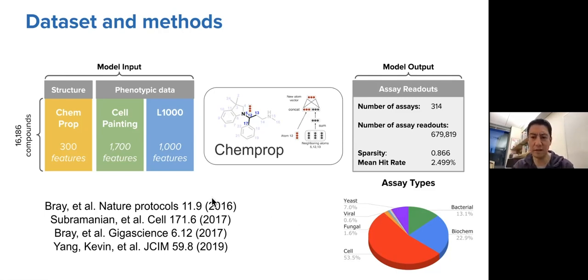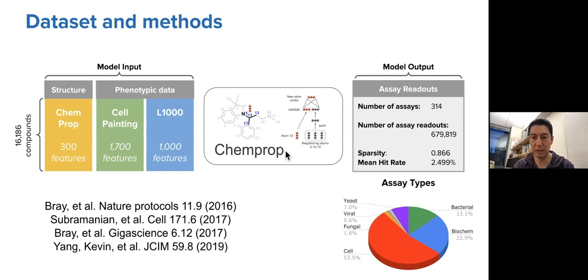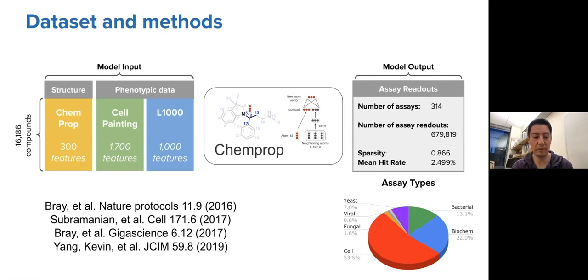All this data is publicly available — the cell painting data, the L1000, and ChemProp software. The only piece currently not publicly available is the assay data, collected at the Broad Institute after a decade of drug discovery research, but we aim to make it publicly available for future research and to reproduce the experiments in this work.